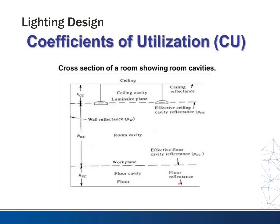We don't need to get into the nitty-gritty of how CU is calculated because most manufacturers have this taken care of for you. But things that affect it include HCC — the difference in height from the ceiling to where the fixture is located — the room cavity, which is the distance from the work plane to the light fixture, and the floor cavity. All of these variables are used in calculating the coefficient of utilization.